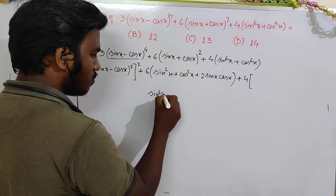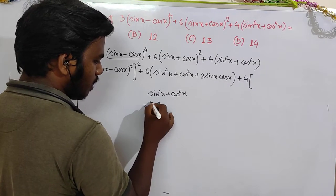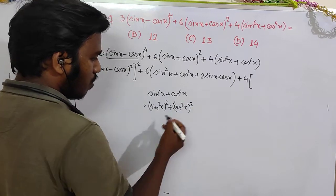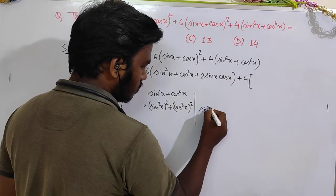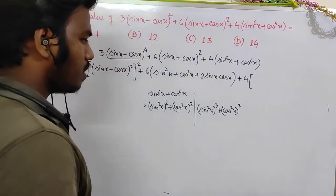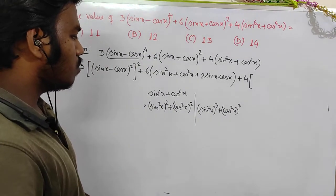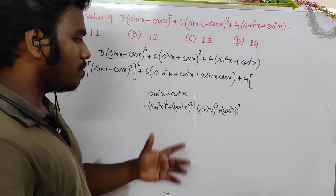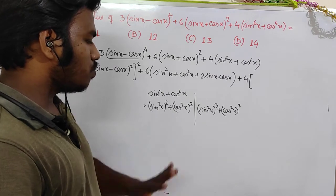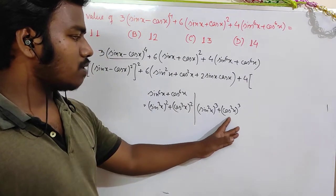Now for sin to the power 6 x plus cos to the power 6 x, I am going to write it as sin squared x cubed plus cos squared x cubed. Using the identity a cubed plus b cubed equals a plus b into a squared minus ab plus b squared. And we use sin squared x plus cos squared x equals 1.